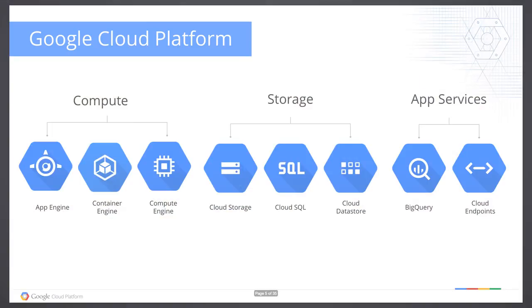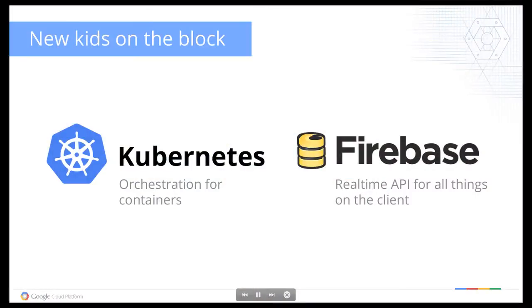Google Cloud Platform is actually fairly deep in terms of what you have. You have Container Engine and Compute Engine. On the storage side there's Google Cloud Storage, Cloud SQL, and the datastore. Then you have the big app services: Cloud Endpoints, BigQuery for processing data. And there are newcomers including Kubernetes, which is orchestration for containers, and Firebase, the real-time API now part of Google.